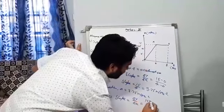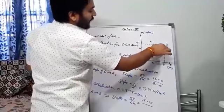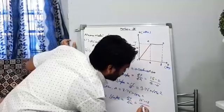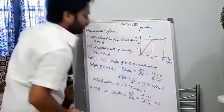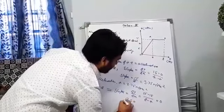So if I see the change, 15 minus 15, time corresponding to B is 8, time corresponding to A is 4. So this change means 0. That means acceleration equals to 0.